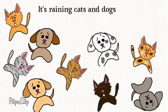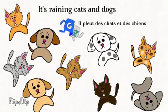For example, if I ask you to translate the famous expression describing heavy rain, it's raining cats and dogs, your first instinct may be, il pleut des chats et des chiens.